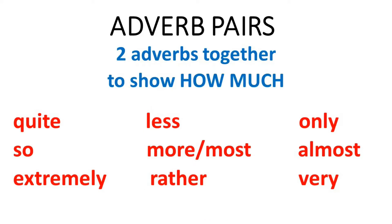Now let's have a look at adverb pairs. As the word pair suggests, we put two adverbs together to show how much we do the verb. Words include quite, so, extremely, less, more or most, rather, only, almost and very. We use these words alongside another adverb, so you can add any of these words in front of a normal adverb.